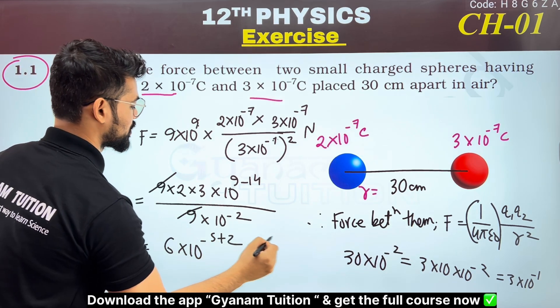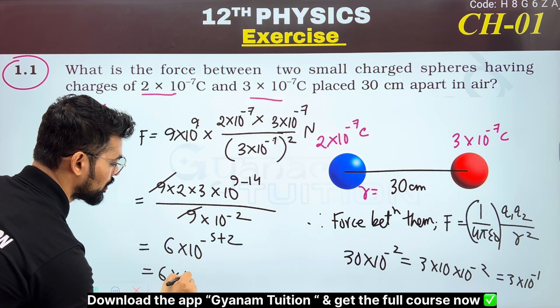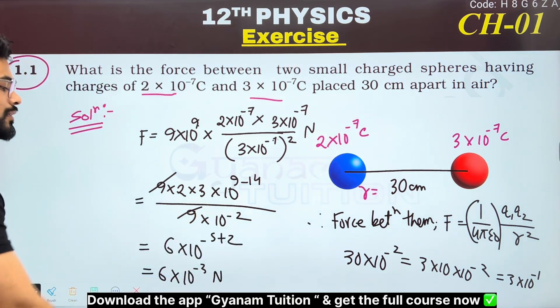We get our answer equal to 6×10⁻³. This is the answer for exercise question one.